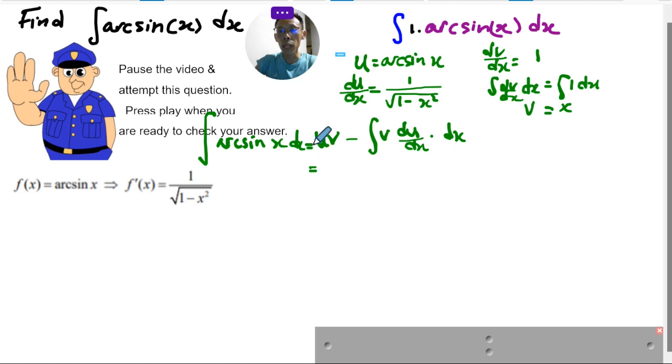So putting this thing together, u in this case is arcsin x, v is x, so I will put x arcsin x minus the integral of v, so it's x, du dx, in this case, is 1 over square root of 1 minus x square dx.